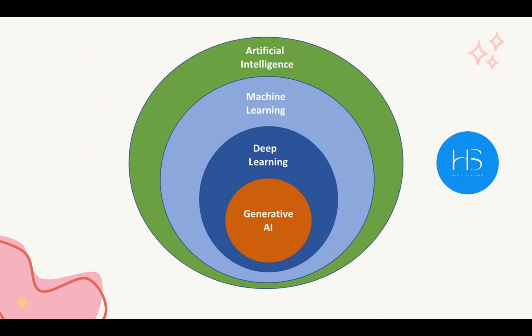So this is the basic diagram of what we have learned: artificial intelligence is a subject in computer science, under that we have machine learning, under that we have deep learning, and within that we have generative AI. I hope all these terminologies are clear to you, and now if somebody is talking about these terminologies, you will have an idea of what they are and why they are there.